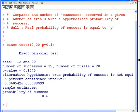The exact binomial test. Data 12 and 20, number of successes equals 12, number of trials 20, p-value 0.1075. There we go.